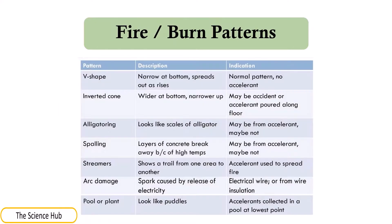Burn patterns include: V-shape — narrow at bottom and spreads out as it rises, indicating a normal fire pattern with no accelerants. Inverted cone — wider at the bottom and narrower at the top, which may indicate an accident or accelerant poured along the floor. Alligatoring — looks like the scales of an alligator, possibly from accelerants or not. Spalling — layers of concrete break away due to high temperatures, may or may not indicate accelerants. Streamers — show a trail from one area to another and indicate accelerant used to spread fire. Arc damage — sparks caused by release of electricity, indicated by electrical wire or wire insulation damage. Pool or puddle pattern — looks like puddles where accelerants collected at the lowest points.